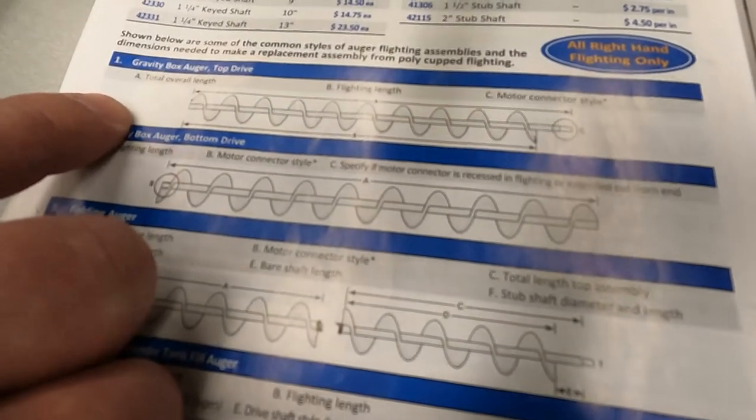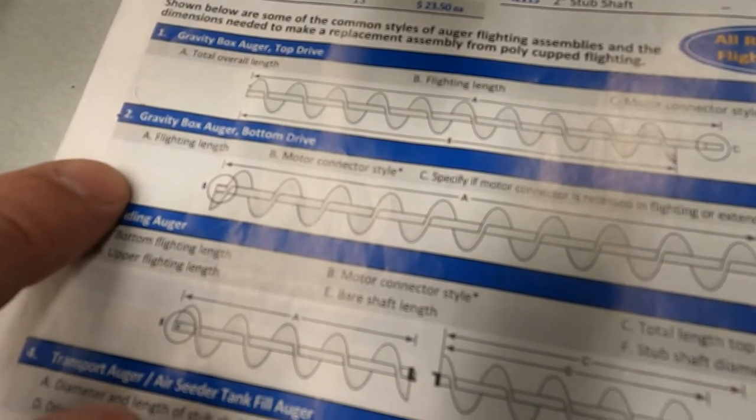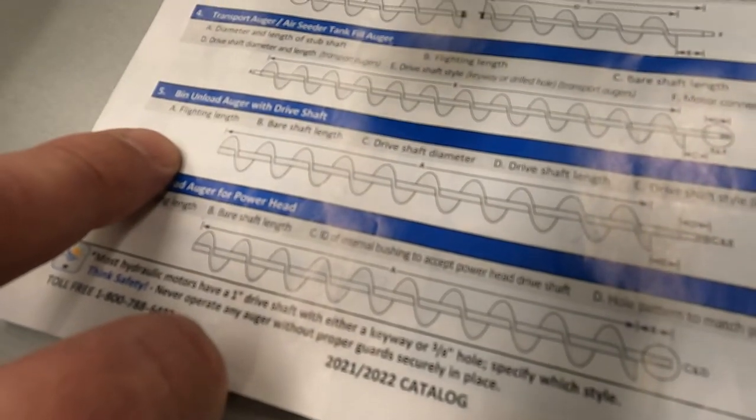Gravity box top drive, gravity box bottom drive, folding auger, transport or air seater auger, bend and load with drive shaft or bend and load for power air.